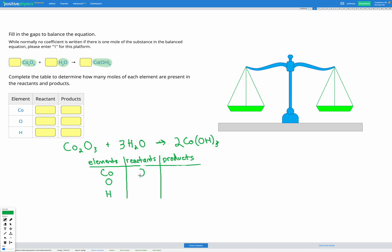So for the Co, we've got two before, we've got two after. For the O, we've got three here and we've got three here. So I've got six in my reactants. In the products, I've got OH with a subscript three and a two coefficient. So that's two times three O's.